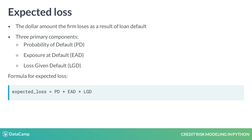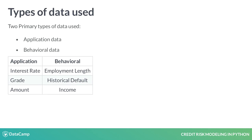This course will focus on probability of default. For modeling probability of default, we generally have two primary types of data available. The first is application data, which is data that is directly tied to the loan application like loan grade. The second is behavioral data, which describes the recipient of the loan, such as employment length.